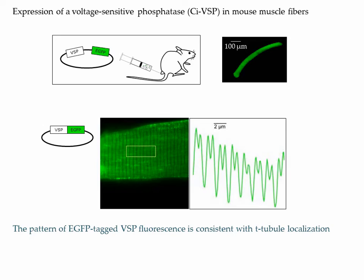For this, we transfected small muscles from mouse with plasmid constructs encoding a VSP and EGFP as expression reporter. After a week or so, we isolate the muscle fibers from the transfected muscles and we look for the green ones. In a few experiments, we used plasmid constructs encoding a fused version of VSP and EGFP. This is a confocal image from a muscle fiber expressing this construct — it produced a very nice transverse striated pattern giving double peaks separated by 2 micrometers, very consistent with the VSP being localized within the transverse tubule membrane of the muscle fibers.